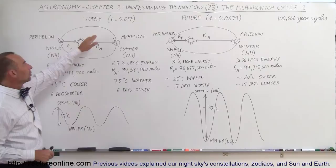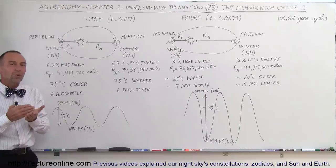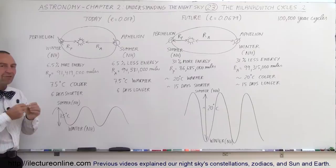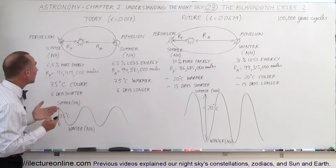Currently, today, the eccentricity is about 0.017, which roughly means that we're about 1.7% closer and 1.7% farther than the average distance between the Earth and the Sun at the various stages of its orbit.